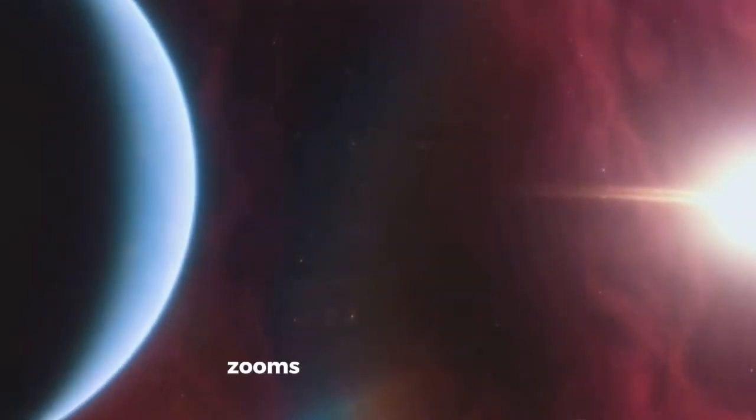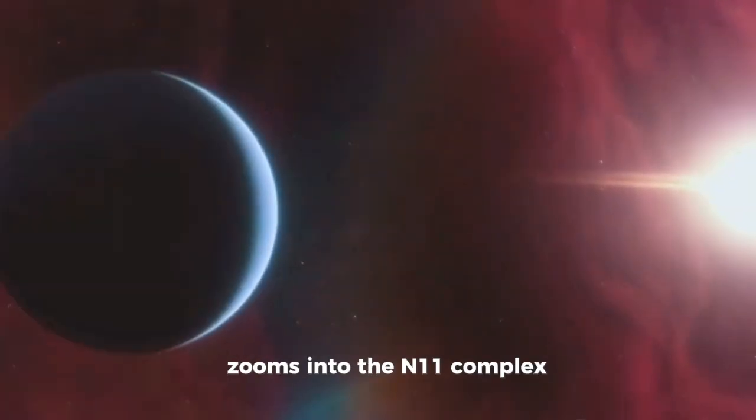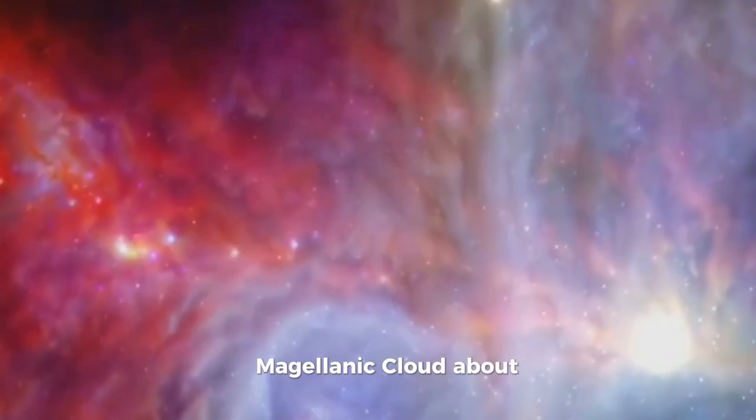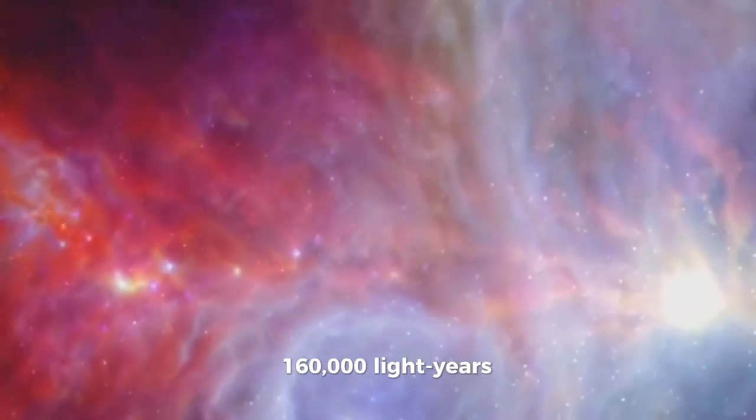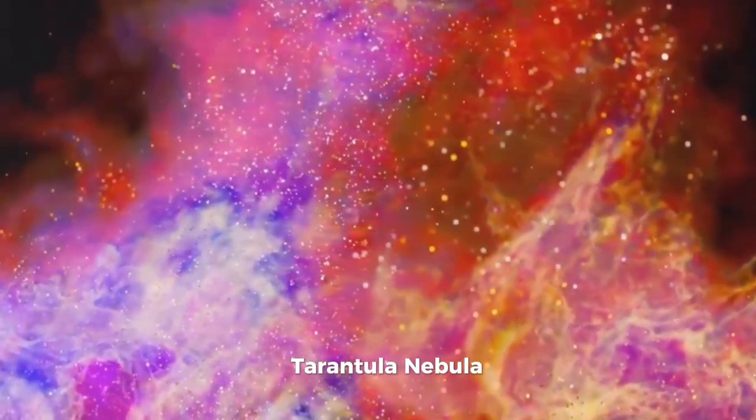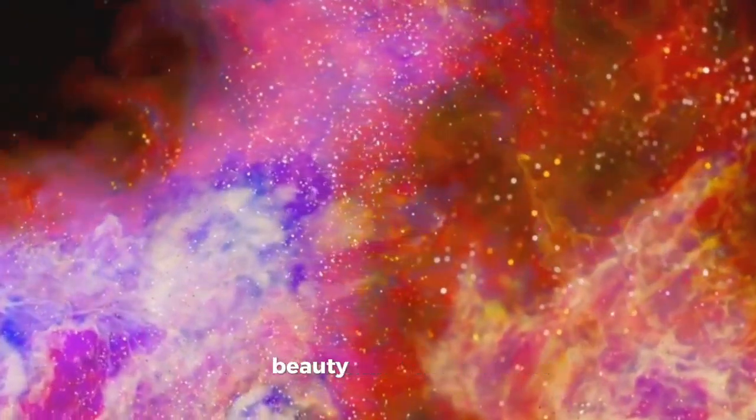Hubble's latest image zooms into the N11 complex, a vast star-forming region in the Large Magellanic Cloud about 160,000 light-years away. This is the galaxy's second-largest stellar nursery after the Tarantula Nebula, and it's teeming with chaotic beauty.